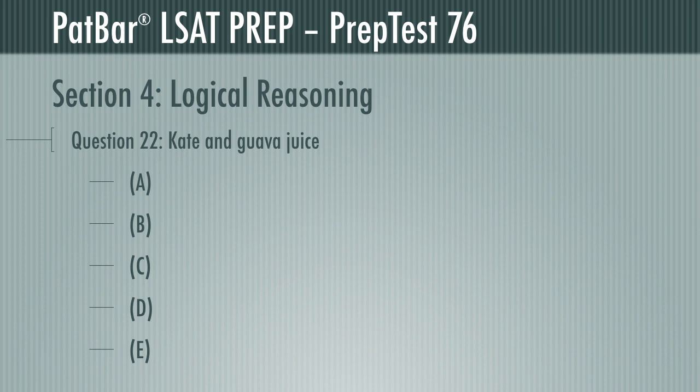Question 22 introduces us to Kate, who on Wednesdays usually buys some guava juice. We're told she can only buy it at the local health food store, and the passage postulates that she must sometimes shop at the local health food store on Wednesdays. One of the following answers most closely matches that reasoning. The phrasing will point you to the correct answer: X is usually true, Y must be true, therefore Z must sometimes be true.